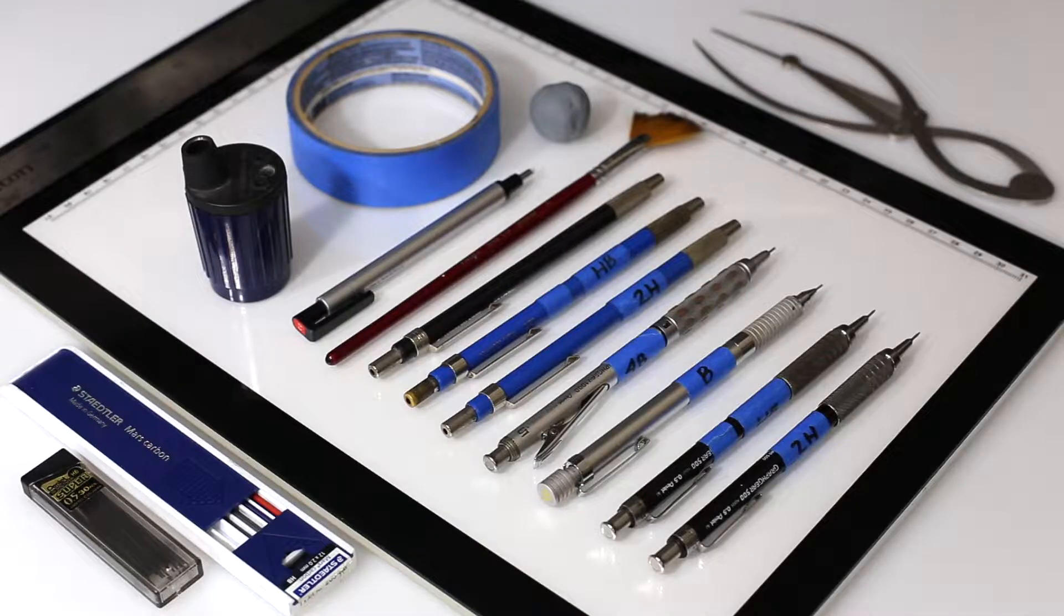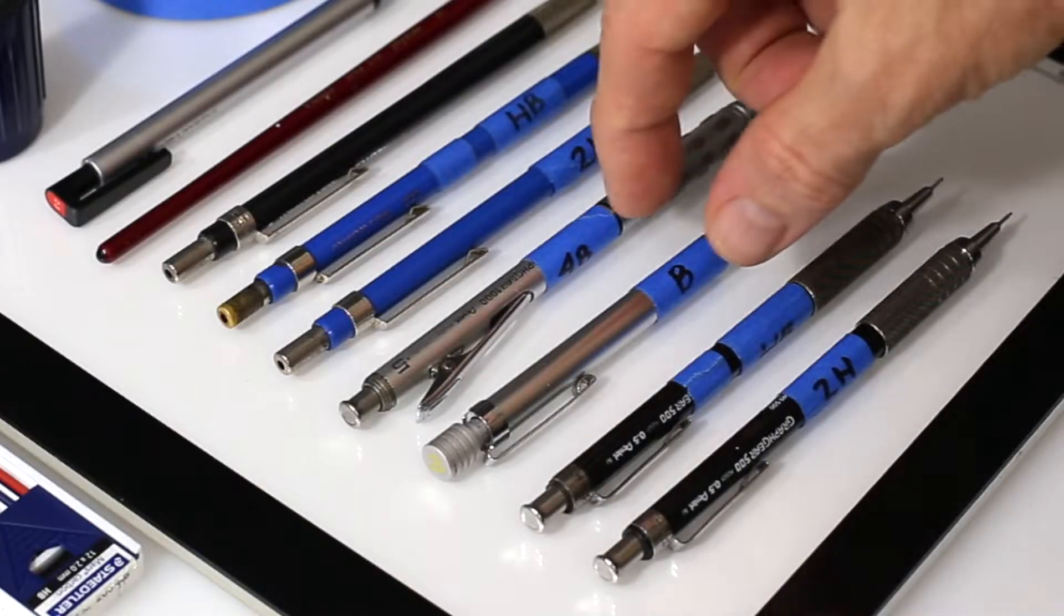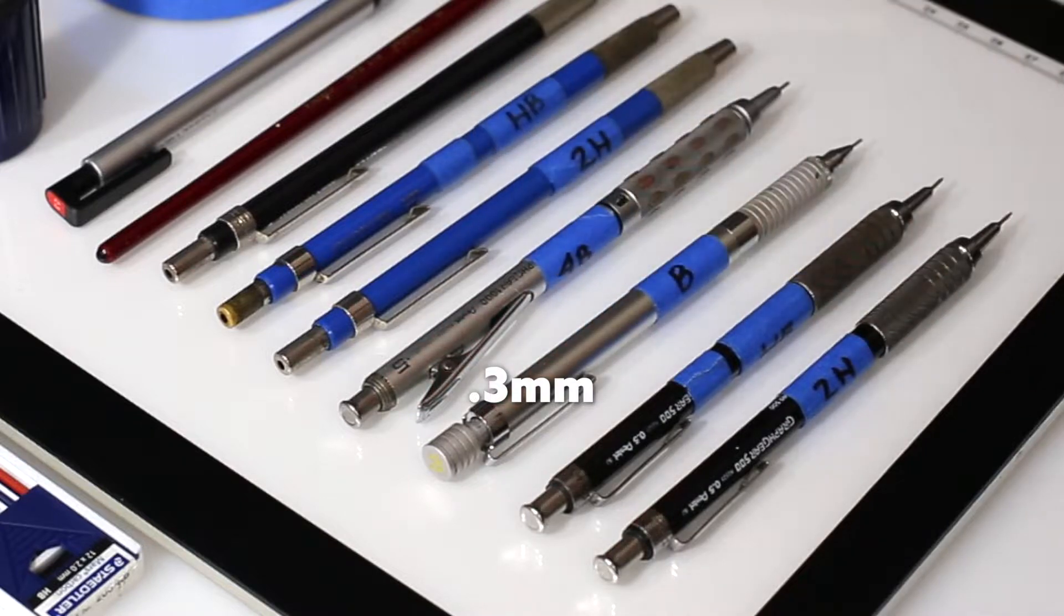Okay, these are most of the tools we'll be using. We've got four mechanical pencils. Three of them are 0.5 millimeter. This one right here is a 0.3 millimeter for smaller details.